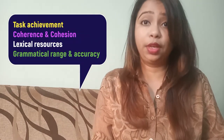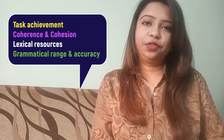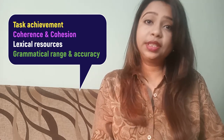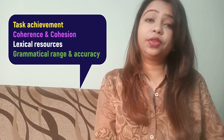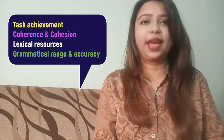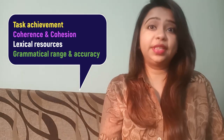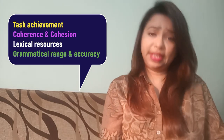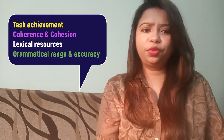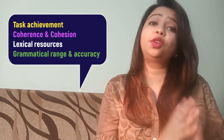I'm starting off by discussing the four major aspects in which your writing is actually evaluated. Number one is task achievement, number two is coherence and cohesion, number three is lexical resources, and number four is grammatical range and accuracy. All four criteria cover equal importance — 25% each of the full writing section — so you need to score equally well in all four to secure a good score.